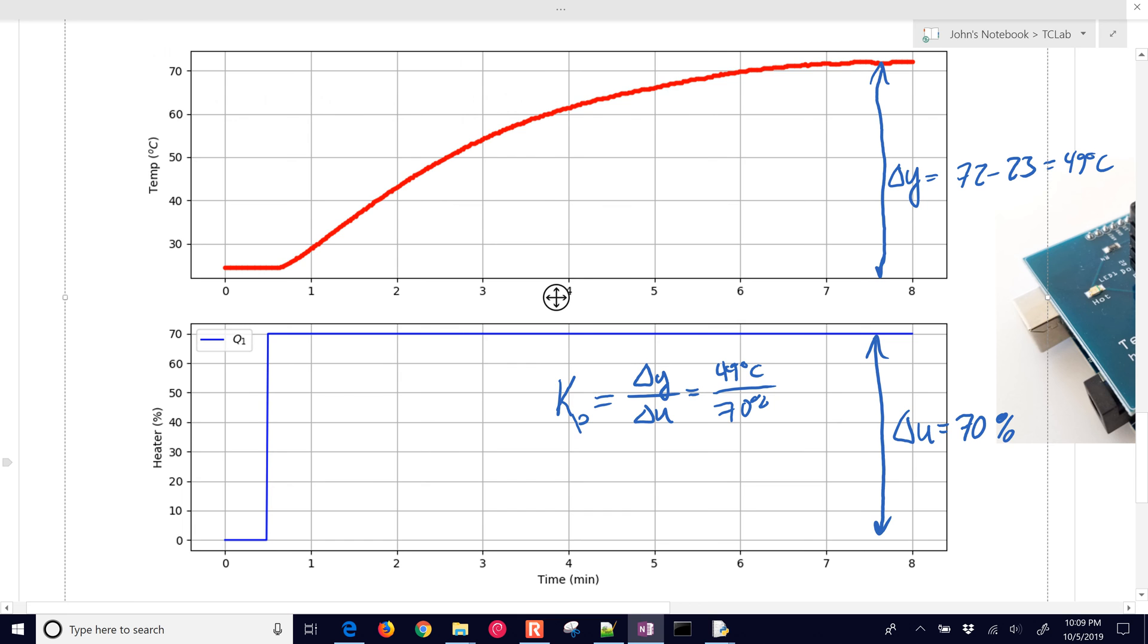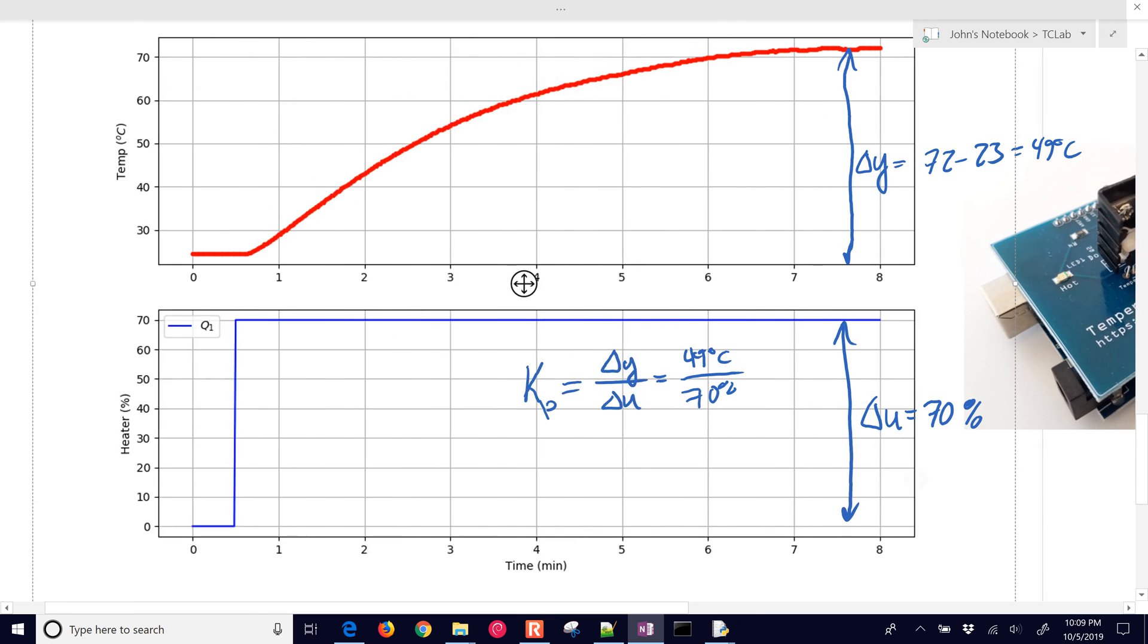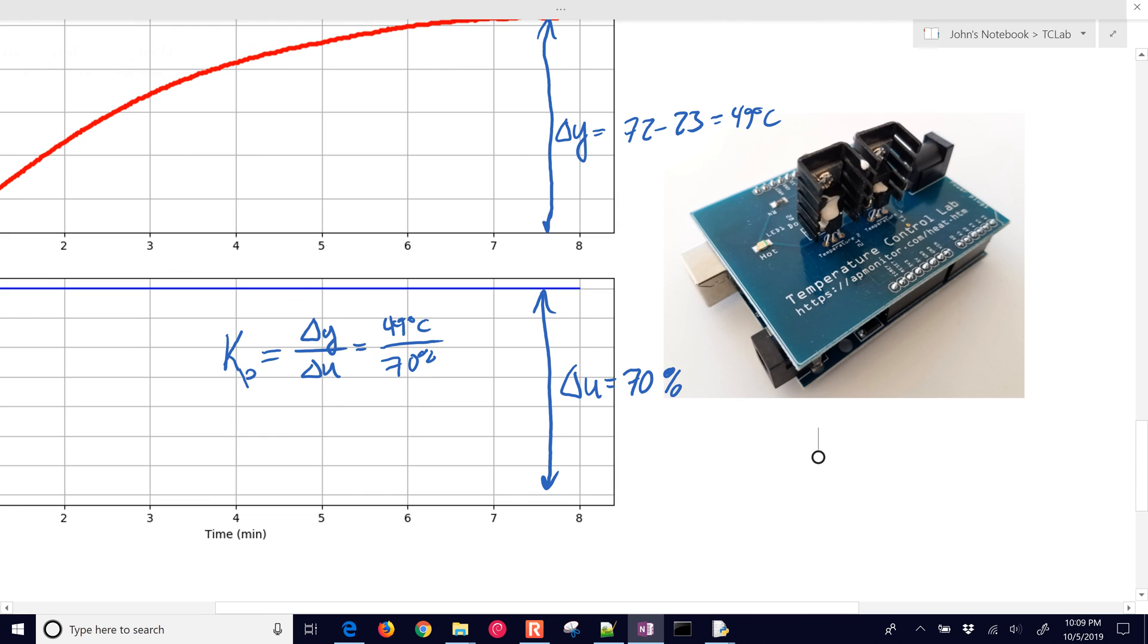Let's just see if I can approximate the numeric value there. So equals 49 divided by 70. I think I need to do the equal sign on the other side to make this work. All right, let's try this. Equals, and then it says 0.7. So 0.7 is our gain, and that's going to be degrees Celsius per percent on the heater.